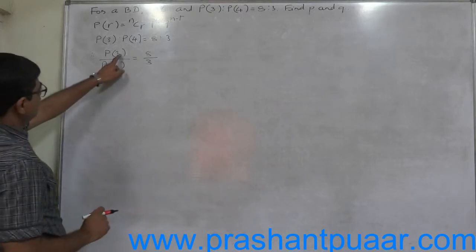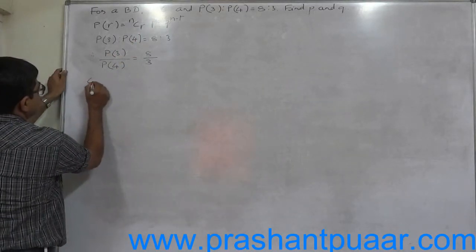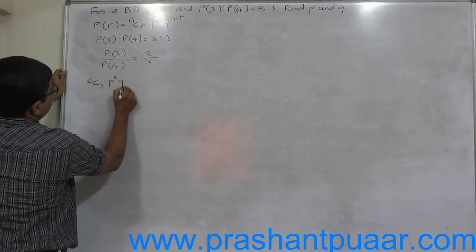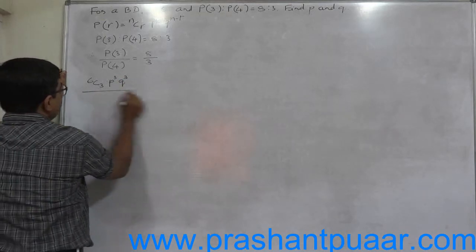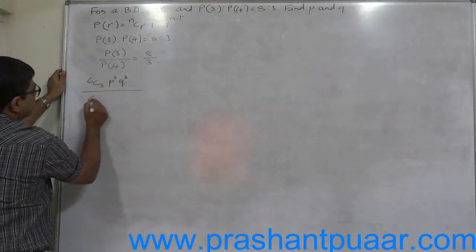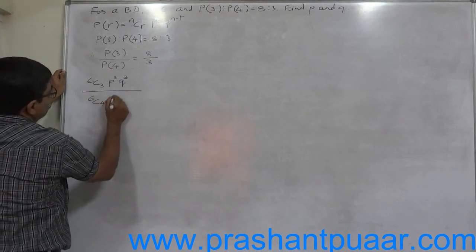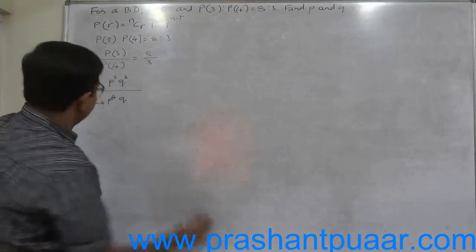Now substitute the values. This is P of 3, so R is 3. That means 6C3 into P raise to 3 into Q raise to N minus R, that is 6 minus 3 equals 3, divided by 6C4 because R is 4 in this case, into P raise to 4 into Q raise to 2.